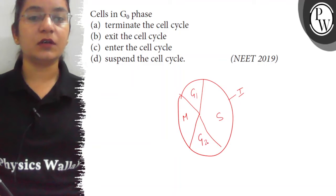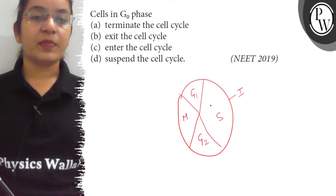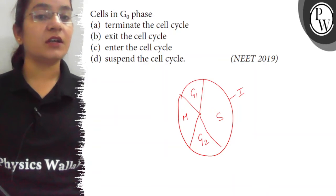Once the cell has to exit the cell cycle, do not divide further, when the cell wants to differentiate and leave the activity of division, then after the end of G1 phase, cell enters the...